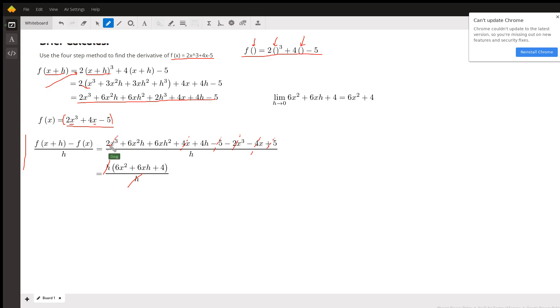I've lightly crossed out the similar terms or the terms that have been combined to 0. That leaves us with these three in the numerator: 6x squared h plus 6x h squared plus 4x. I'm sorry, not 4x, plus 4h.